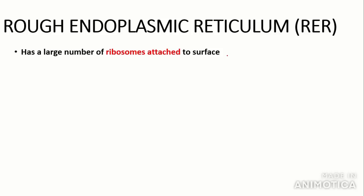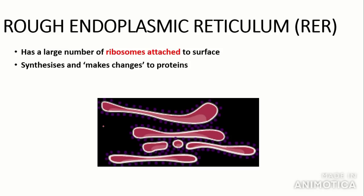Rough endoplasmic reticulum, or RER — the examiner often doesn't accept if you just write RER, so I recommend you write rough endoplasmic reticulum in full. The main thing that distinguishes the rough endoplasmic reticulum is that it has a large number of ribosomes attached to its surface, which is incredibly important to know. Because it has ribosomes attached, its main function is to synthesize and modify proteins. The RER processes them to be packaged into Golgi vesicles to be further modified by the Golgi apparatus.